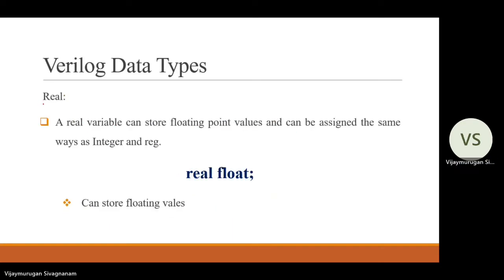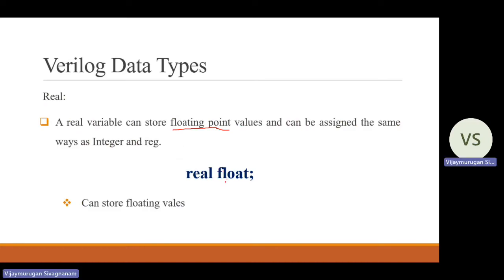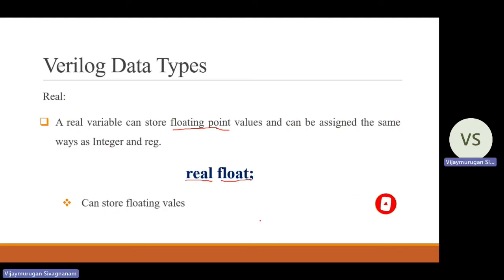The next data type is real. This is also a data type in Verilog HDL. A real variable can store floating point values. If you need an integer value you can use integer instead of real. The keyword is real, and a real variable can be assigned the same ways as integer or register. For example: real float — where float holds a floating point value.